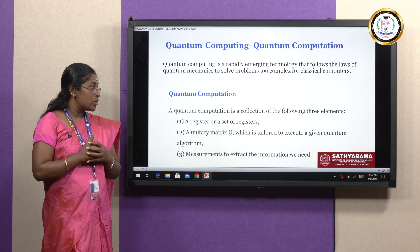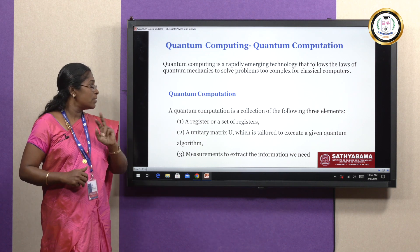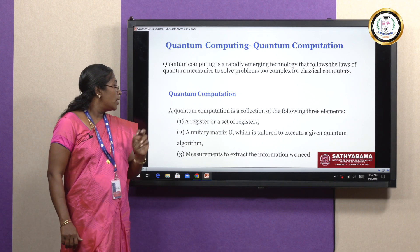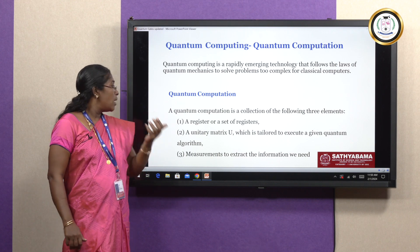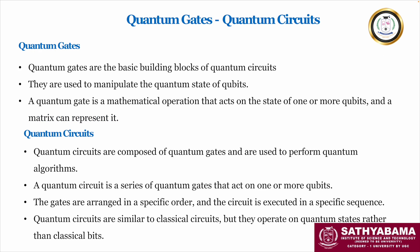The basic elements needed for quantum computation are three things: a register or set of registers, which is used to store the quantum information — that is, to store the quantum bits — and a unitary matrix, which is tailored to execute the given quantum algorithms to solve the given problem. When solving a particular problem, we will get some outcome, and that outcome is measured using some measurements.